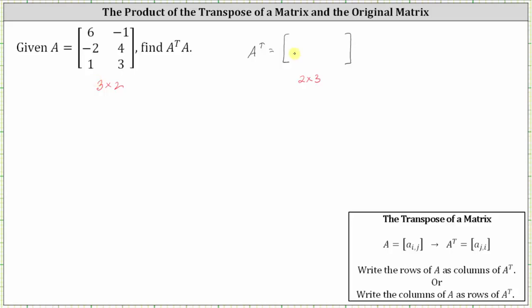Notice the elements in column one of matrix A are six, negative two, one, which become the elements in row one of A transpose. Notice column two of matrix A contains the elements negative one, four, three, which become the elements of row two in A transpose.